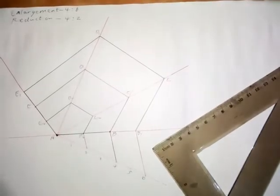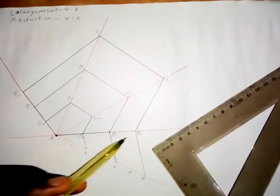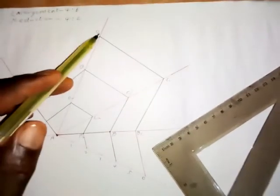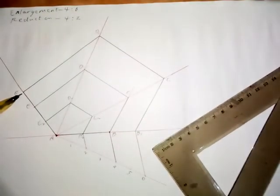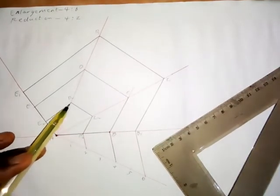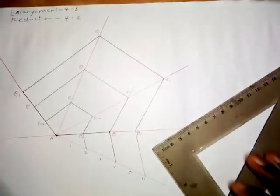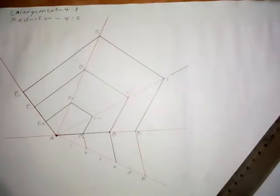For the reduction, we have A, B2, C2, D2, and E2. For the enlargement, we have A, B1, C1, D1, and E1. This is an alternative method that you can use to enlarge and reduce a given figure. All you need to do is practice.